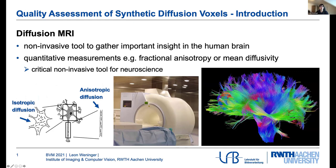As such, it offers quantitative measurements such as fractional anisotropy and mean diffusivity of nerve fibers. It is a critical tool for neuroscience, especially as it is non-invasive and can thus be easily used for different studies.